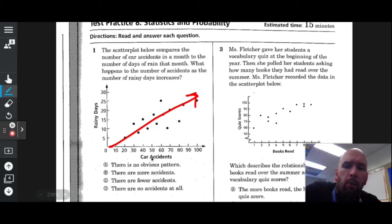As the number of car accidents increase, or as there are more rainy days, there are more car accidents. So what happens to the number of accidents as the number of rainy days increases? There are more accidents. There's a correlation between rainy days and car accidents.